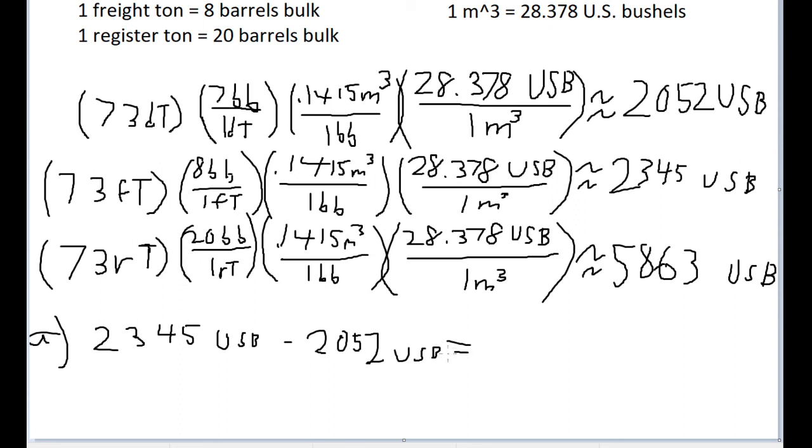This is some pretty simple math at this point, a subtraction. It's one of the most basic forms of math. And I'll actually write this as an approximation. And it gives us about 293 U.S. bushels of difference.